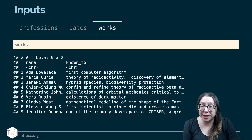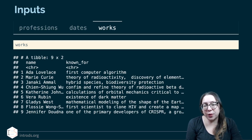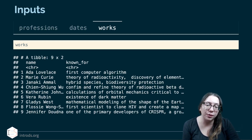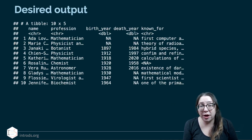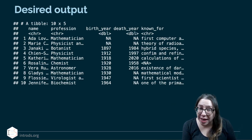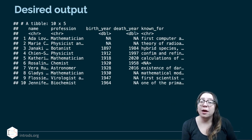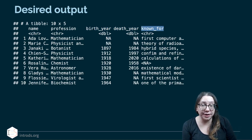The works data frame has information on nine of the 10 women and lists what each is known for — for example, Ada Lovelace for the first computer algorithm, and Marie Curie for the theory of radioactivity. The desired output is 10 rows, one per scientist, with five columns: name, profession, birth year, death year, and what they're known for.